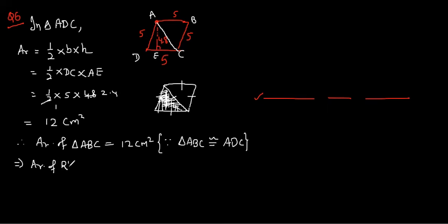So this area is 12, so this triangle area is 12. So can I say area of rhombus ABCD will be 12 plus 12, 24 centimeter square? I hope it is clear. Yes. By adding both the triangles I will get the area of rhombus. Yes, good, thank you.